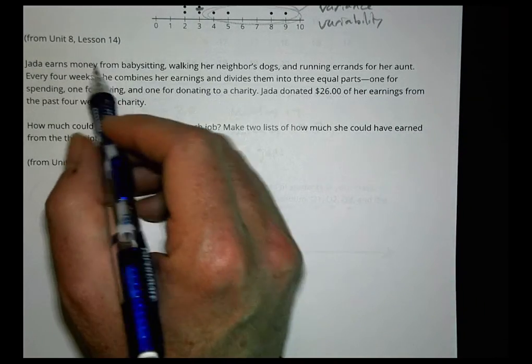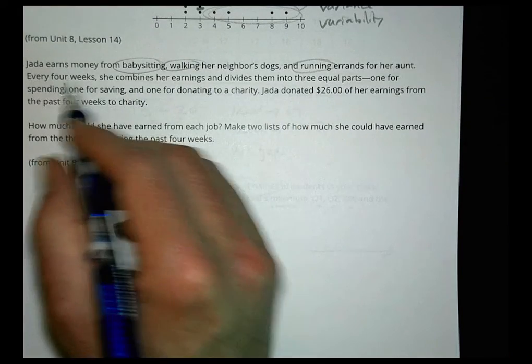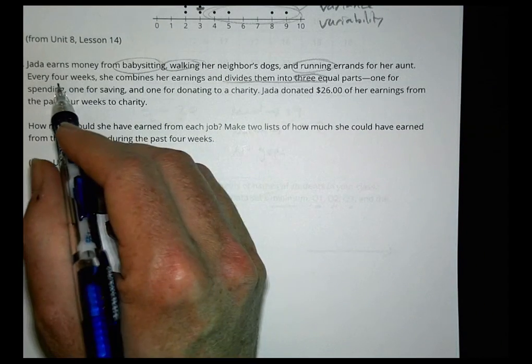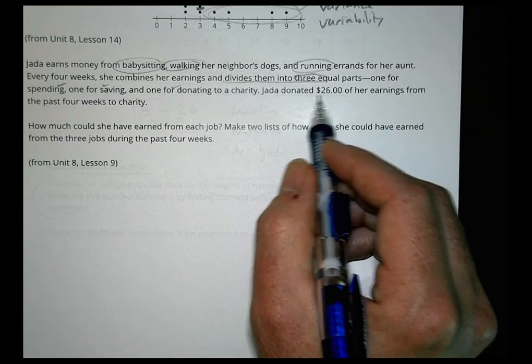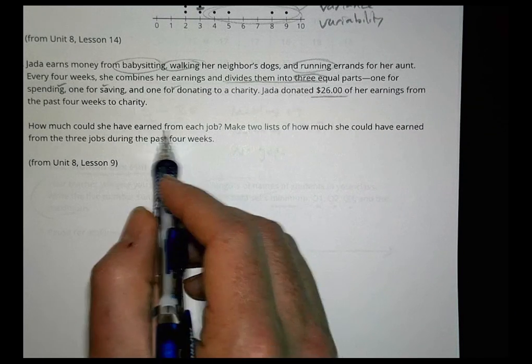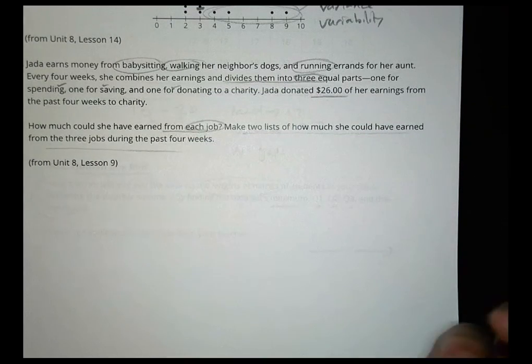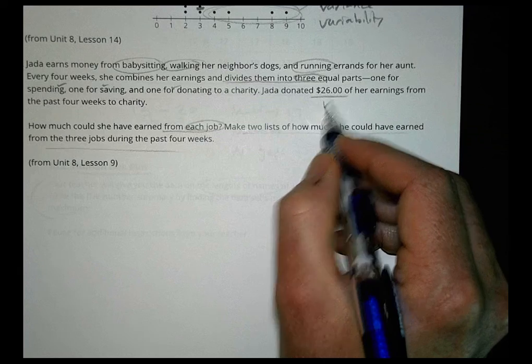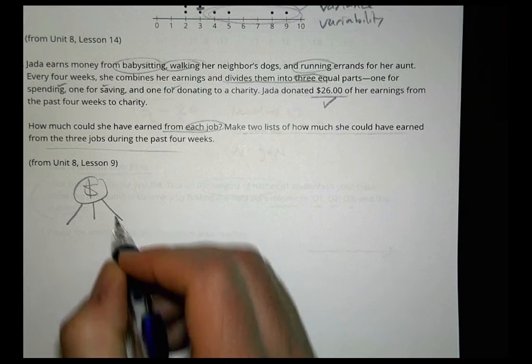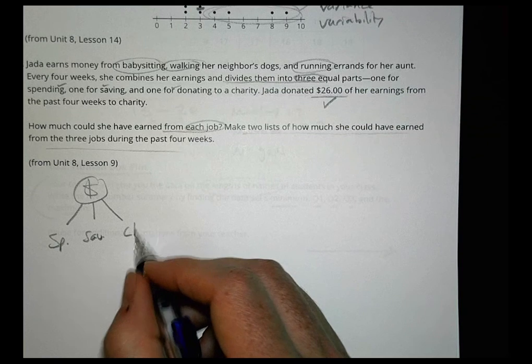The last question here. It says, Jada earns money from babysitting, walking her neighbor's dogs, and running errands for her aunt. Every four weeks, she combines her earnings and divides them into three equal parts: one for spending, one for saving, and one for donating to charity. She donated $26 of her earnings from the past four weeks to charity. So basically what we're doing here is this: she gave $26 away. She takes whatever money she makes and she's going to divide that into three parts: spending, saving, and charity.